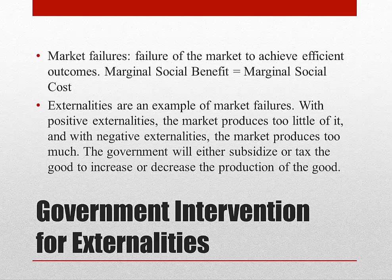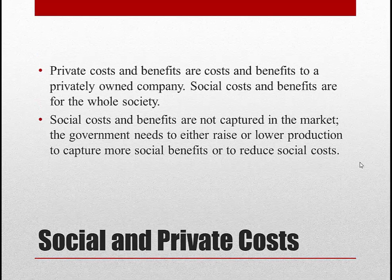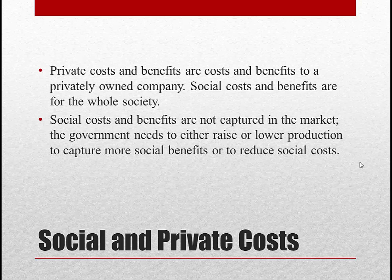Social benefits and costs are for the whole society. Because the market only cares about private benefits and costs, the government needs to step in to raise or lower production. There are two types of costs and benefits: private and social. Private costs and benefits are related to the firm, whereas social costs and benefits reflect that of the whole society. Social costs are how much it costs society to produce something, and social benefits are how much it benefits society to produce something. Private costs are how much it costs the firm to produce something, and private benefits are how much it benefits the firm to produce something.